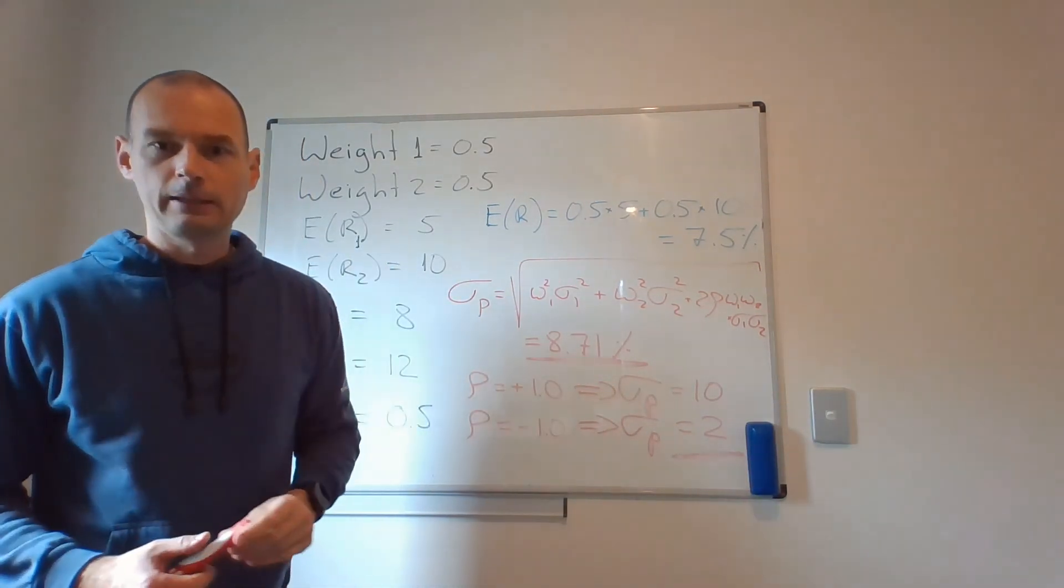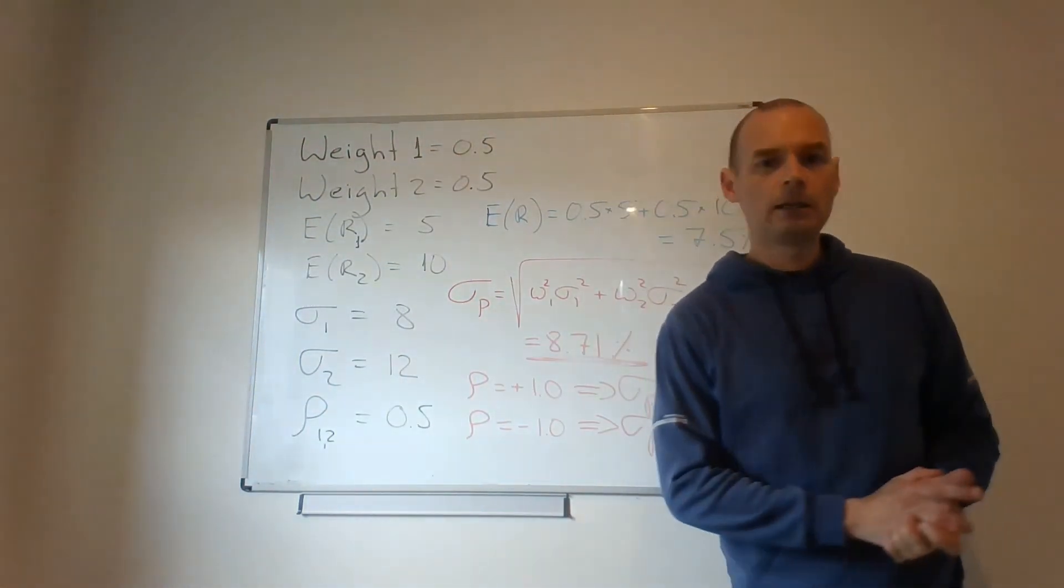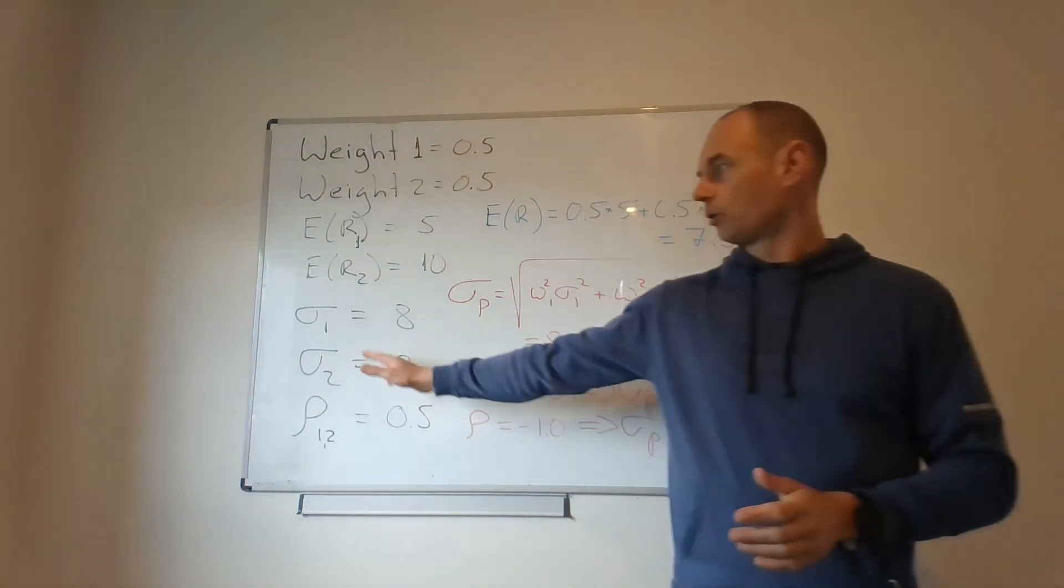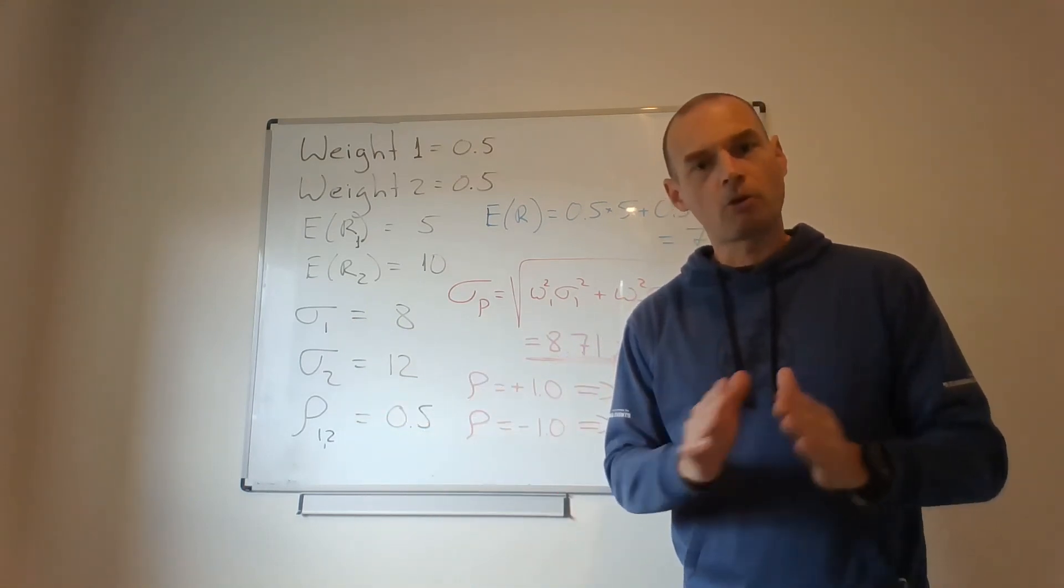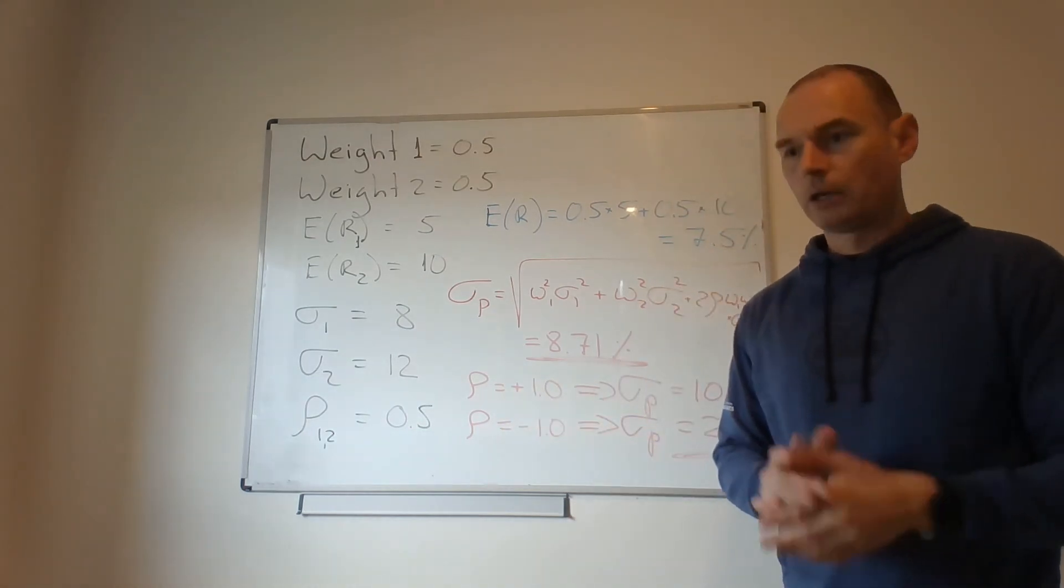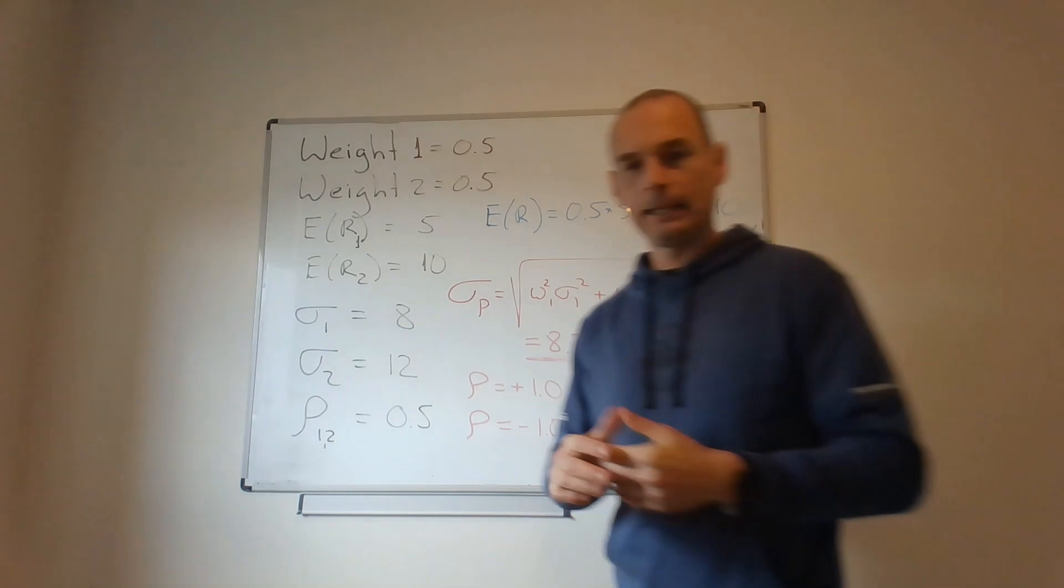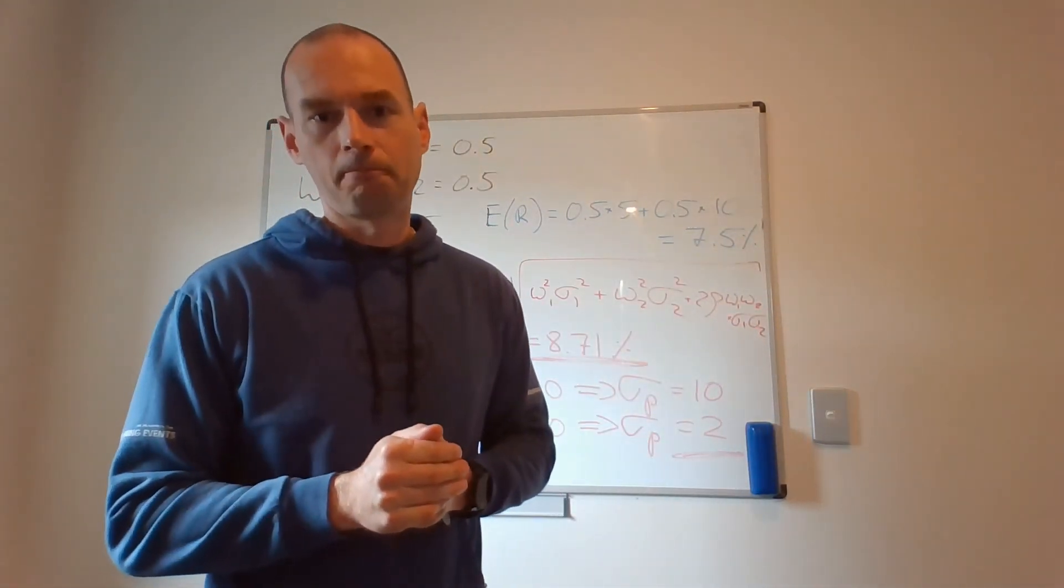So what is the bottom line? The bottom line is correlation coefficient is extremely important. The lower it is, the better off you are from the perspective of portfolio diversification. Thank you very much for listening. And in the next video, I will be talking about Efficient Frontier. See you.